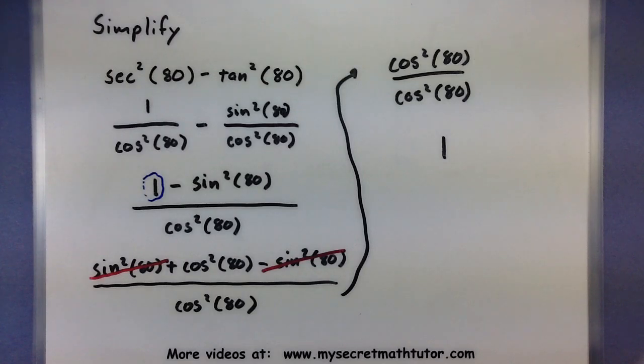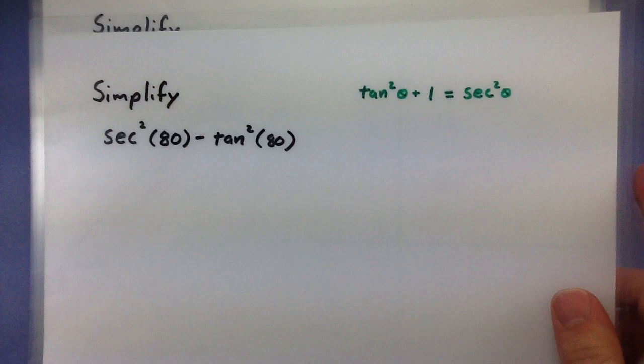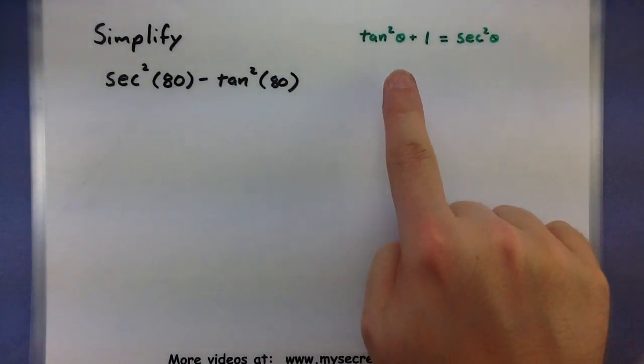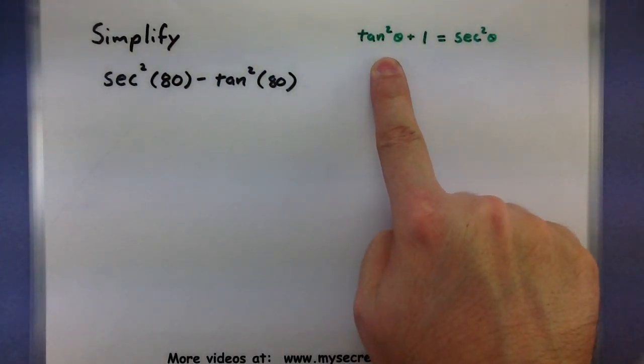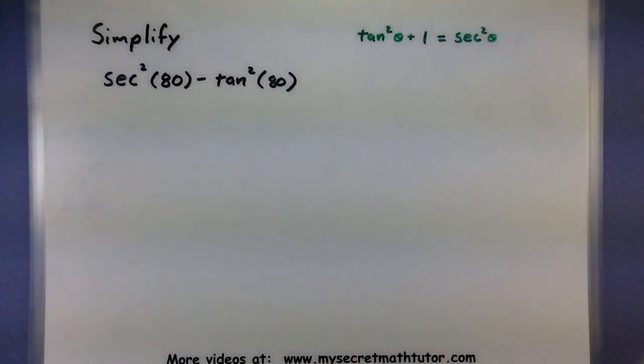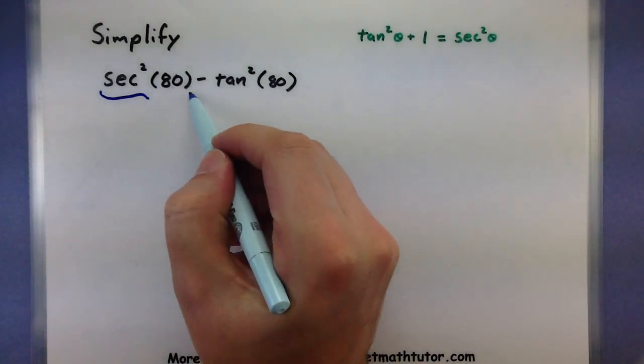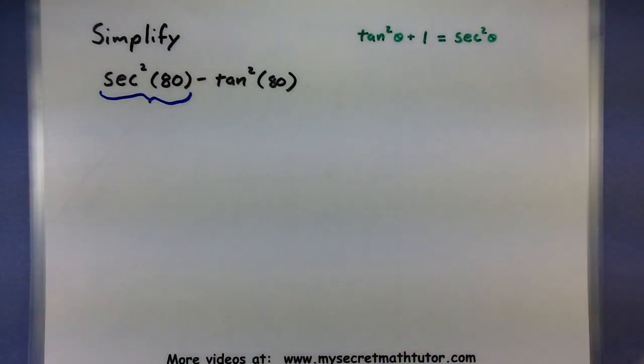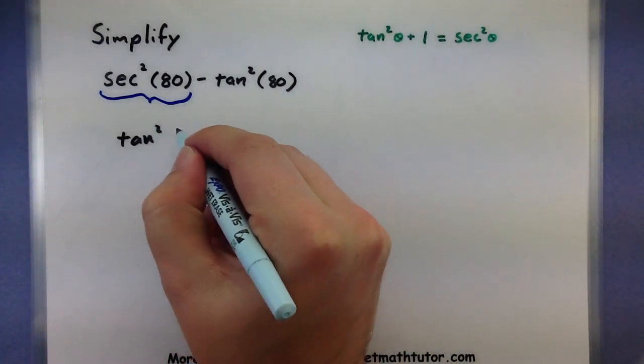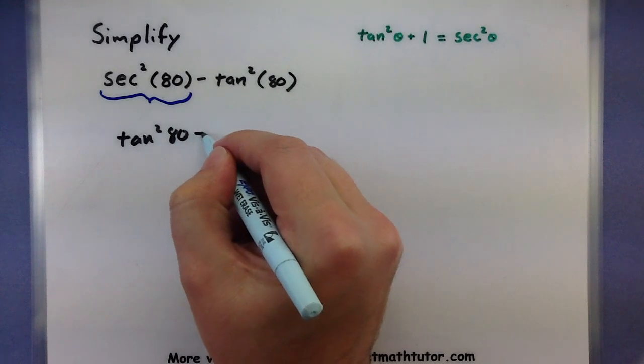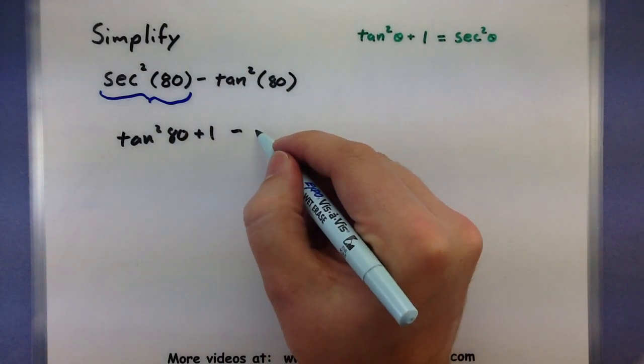Now the neat part about trigonometry is that you can often find many different ways to do the same problem. In fact, let's do this one more time, only we'll use one of our alternate forms. So we're going to simplify this again, but I'm going to use the identity tan²θ + 1 = sec²θ. And let's see how this works. So this first part, notice how it is sec², which matches this part of my identity. So I'm just going to replace that with tan²(80) + 1. And of course, all of this will be the same.